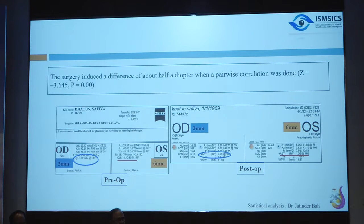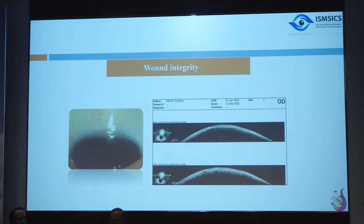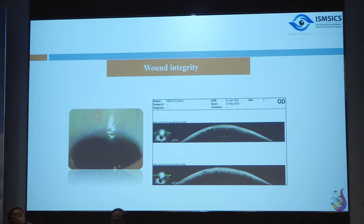Another case showed pre-op astigmatism of 0.7 diopters reduced to 0.0 with the 2mm technique — verified by calculated refraction on topography, not just autoref or subjective refraction. Endothelial cell count CV ratios for both 2mm and 6mm groups were within the normal range of 37. Wound integrity assessed with ASOCT and UBM showed an absolutely tight, compact interface with no problems.